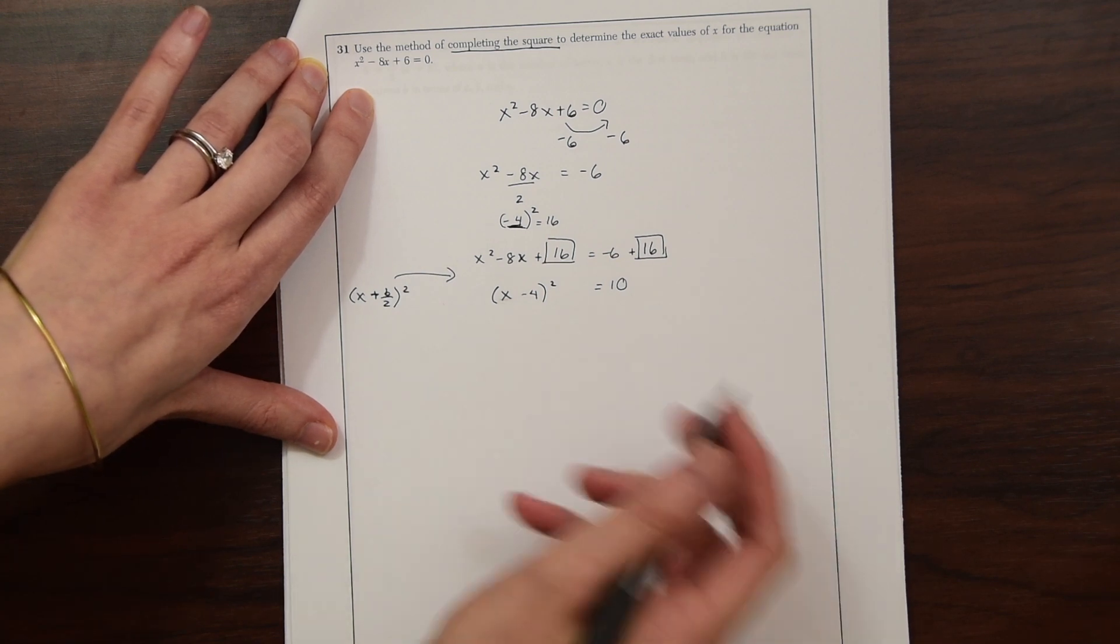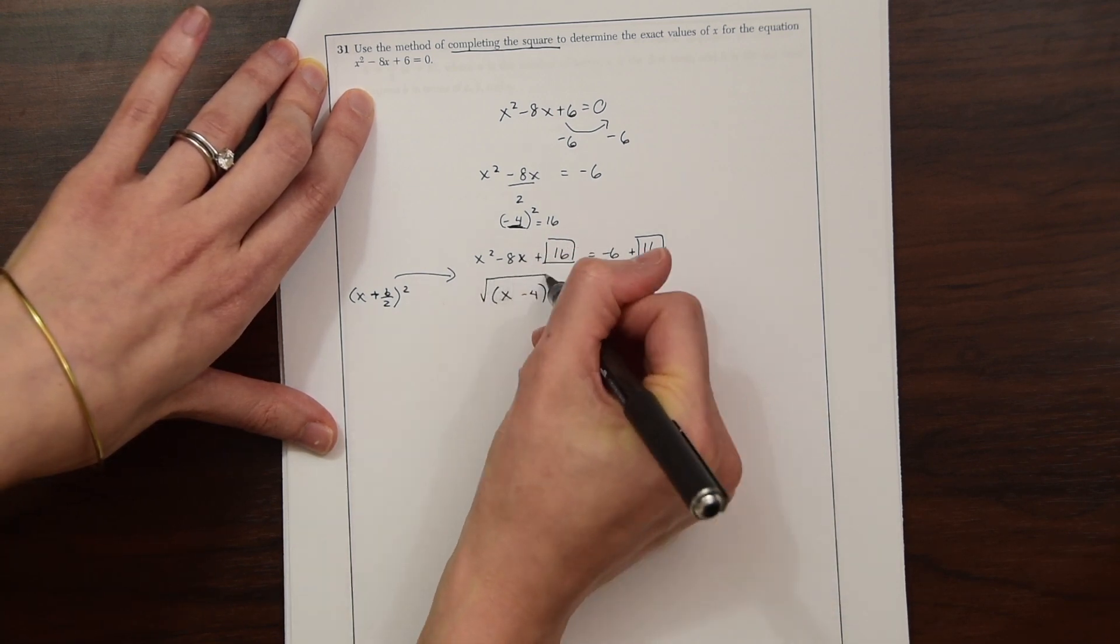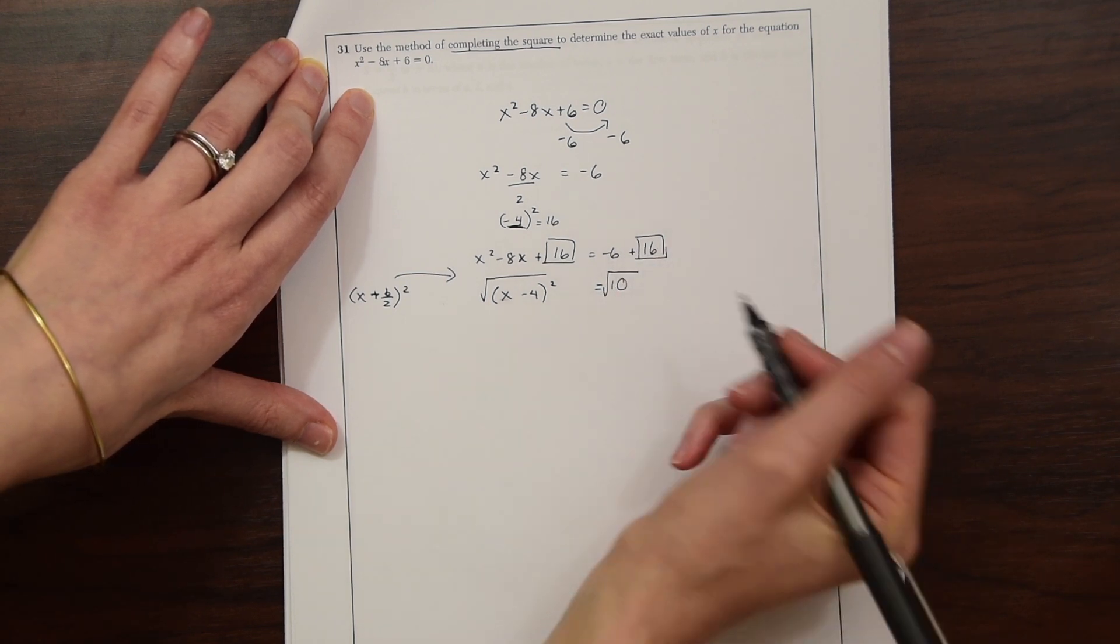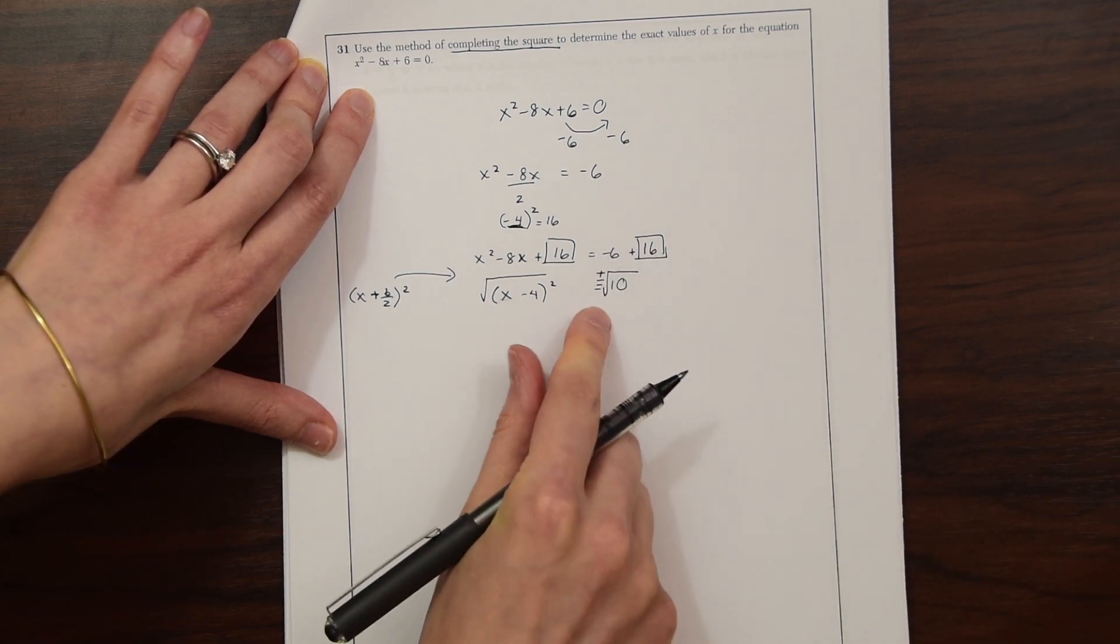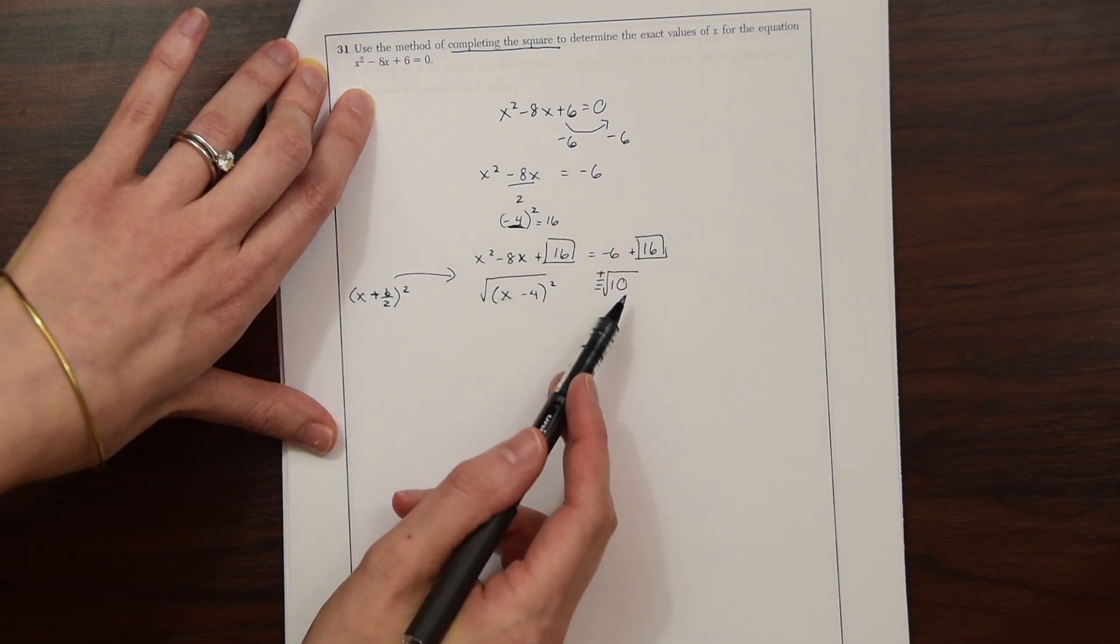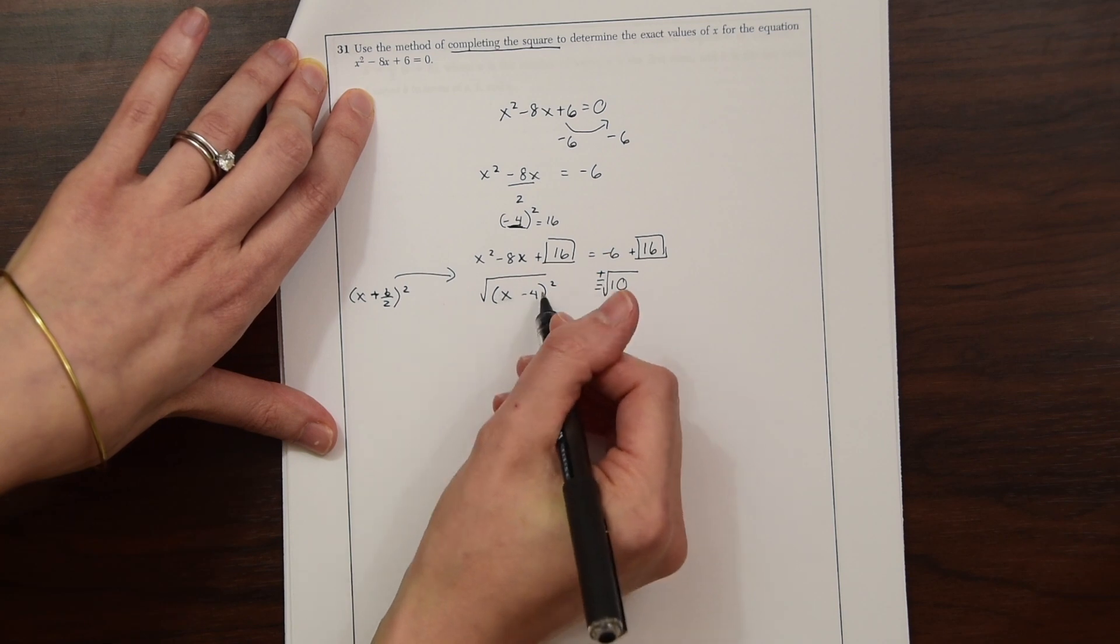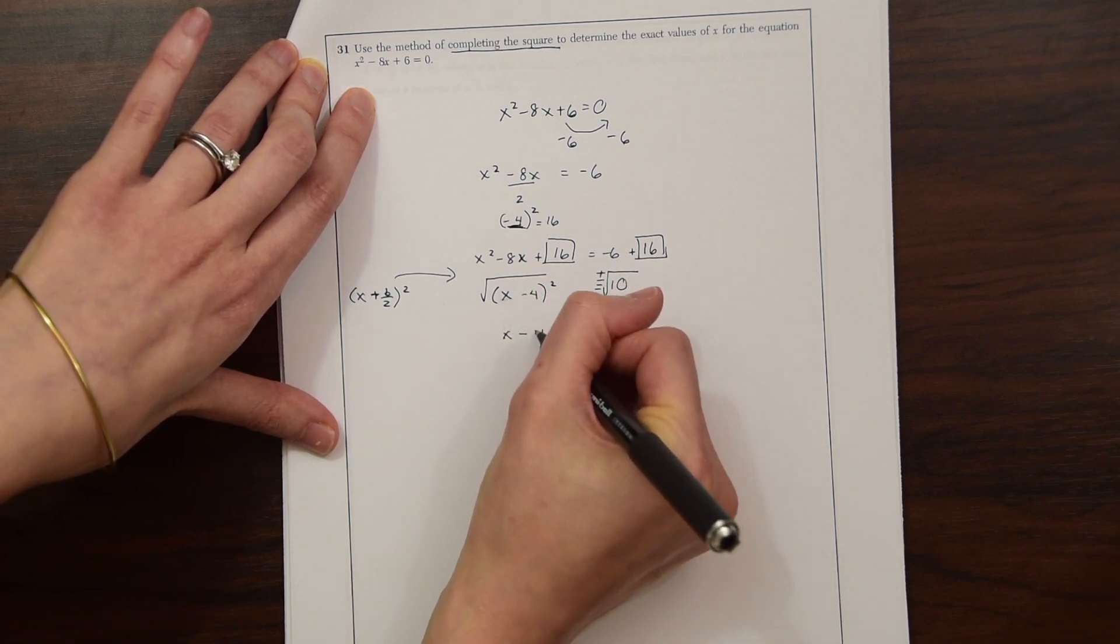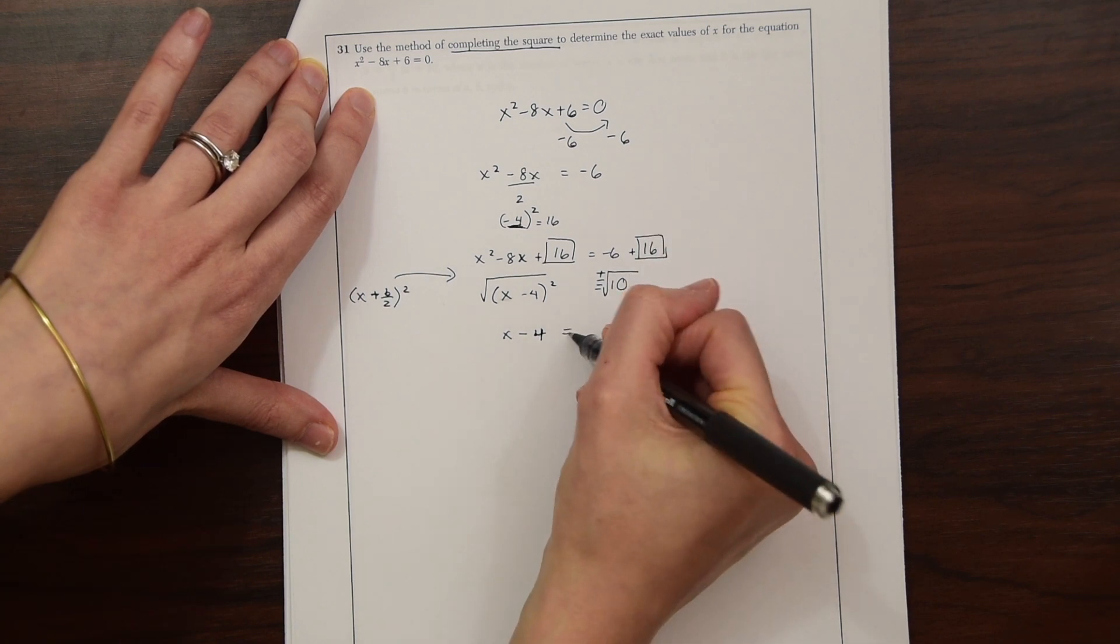So now we just need to solve for x, because we have this x minus 4 squared equals 10. So to solve for x, to get rid of this square, we're just going to take the square root of both sides. Now remember, with completing the square, when solving, we always do a plus or minus sign. So plus or minus radical 10. This gets rid of our squared sign on the left here. That's why we did that.